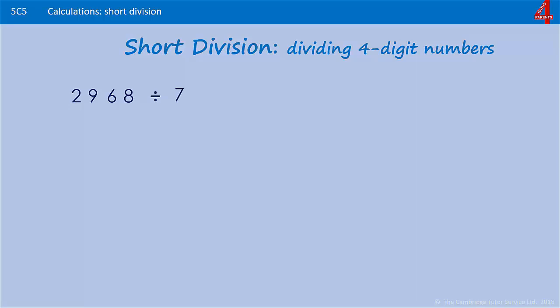Here's another one for you to try. Pause the video and have a go. 2968 divided by 7. 7 won't go into 2, so that's a 0. 7s into 29: 4 lots of 7 makes 28, so we can get 4 lots in and we have one left over.